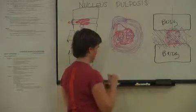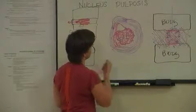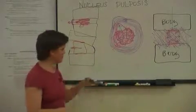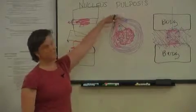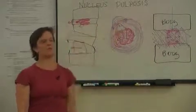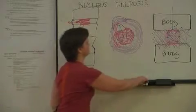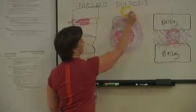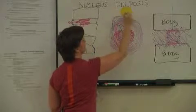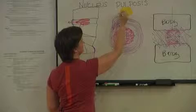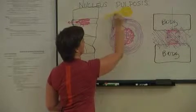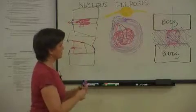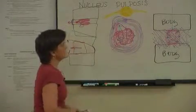And this begins to push out, maybe in this direction, what it might run into in the posterior portion of the spine is what was traveling through that intervertebral foramen: the spinal cord or a nerve root coming out.